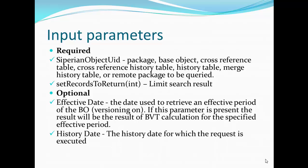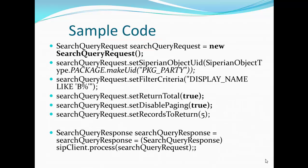Optional parameters are effective_date and history_date, which we saw in our last tutorial. Those are helpful when your timeline is enabled. This is the sample code: create a Search Query Request object, pass the package name, add filter criteria like display name LIKE 'B%', set_return_total to true, set_disable_paging to true, and set records_to_return to five. Then call the Sirius Client's process method passing the request object — this returns the Search Query Response.